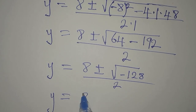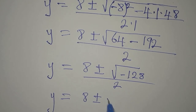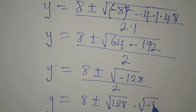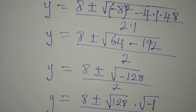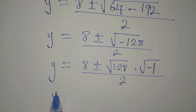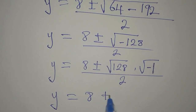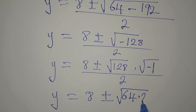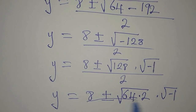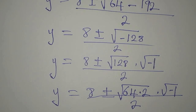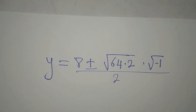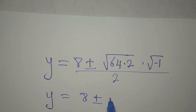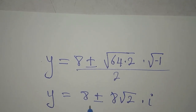So y equals 8 plus or minus the square root of 128, multiplied by the square root of negative 1, divided by 2. Now 128 is the same as 64 times 2, so we have: 8 plus or minus the square root of 64 times the square root of 2 times the square root of negative 1, all divided by 2. The square root of 64 gives 8, so we have 8 plus or minus 8 times root 2 times i, divided by 2.